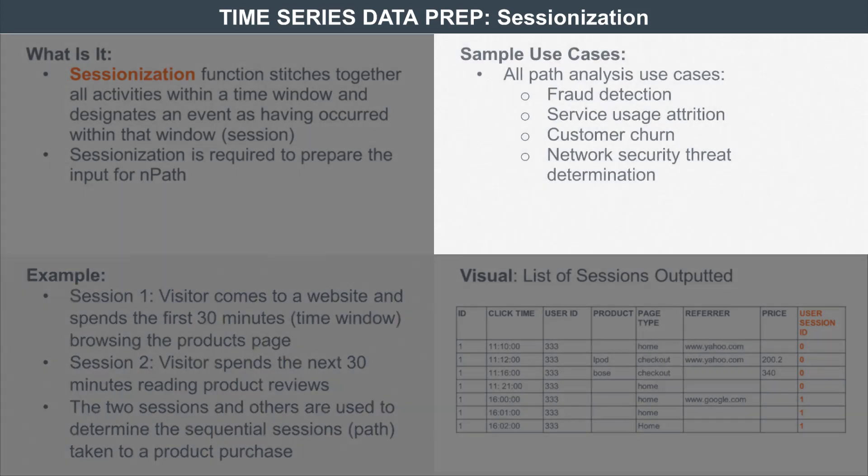What are some sample use cases? You look at things like fraud detection — what is the sequence of activities that preceded some sort of fraudulent activity? What happened before customers churned is another use case. When networks collapse, whether for nefarious reasons or technical reasons, you want to understand what happened before and what the sequence of activities was.